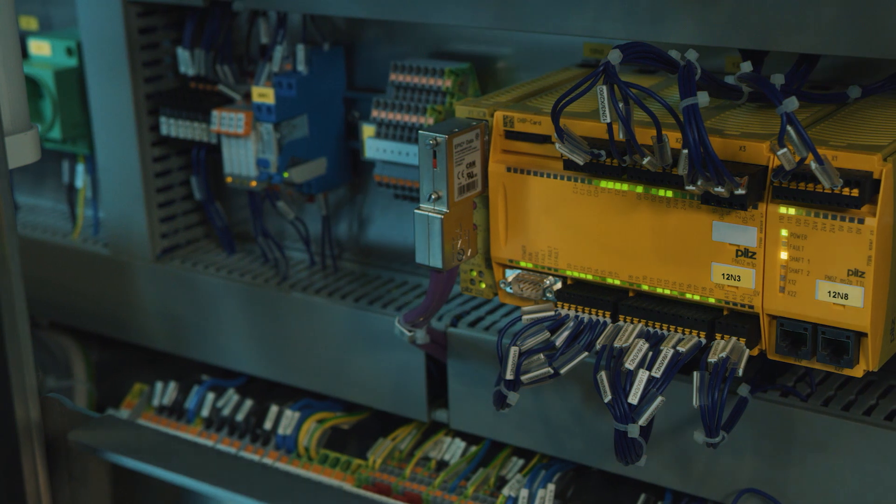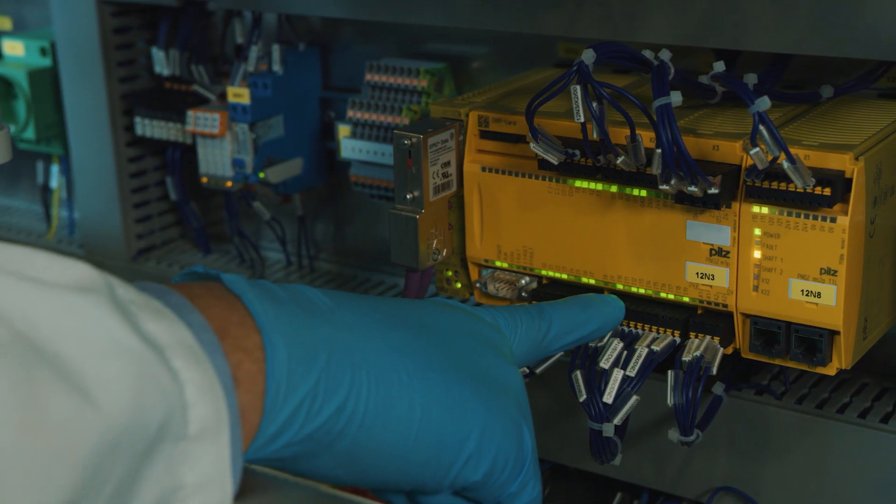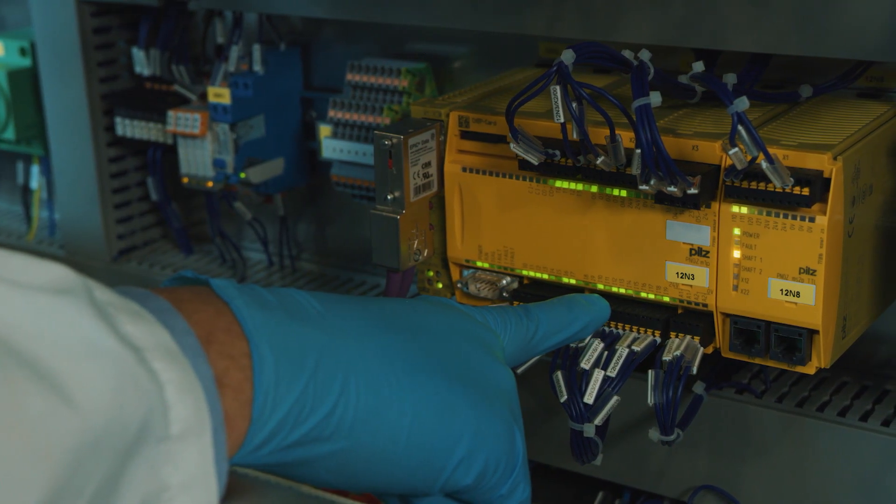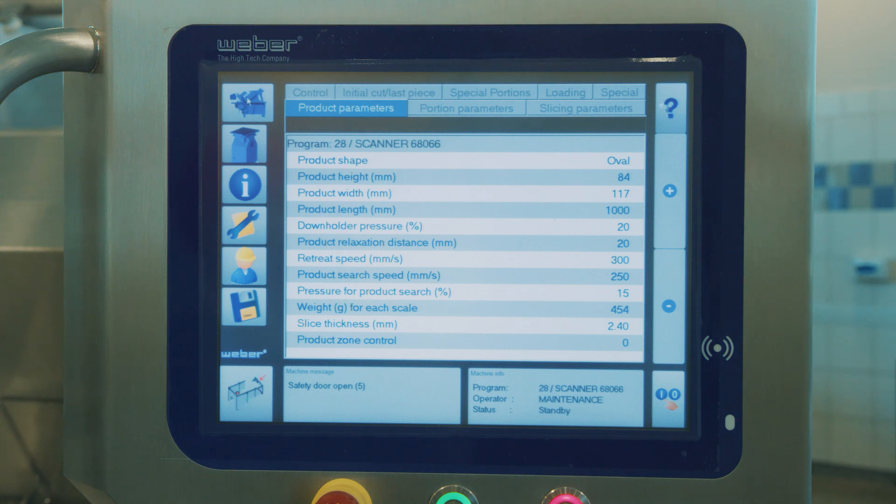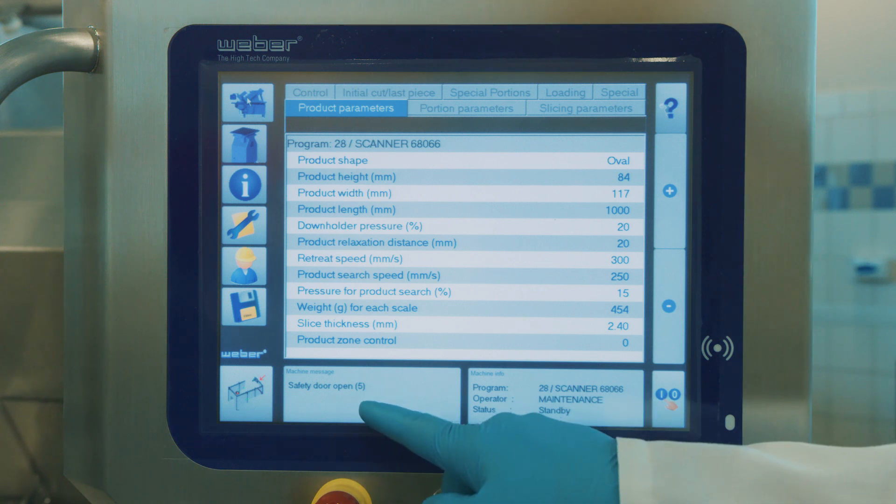Locate the magnet and switch you are troubleshooting. The HMI should give you an indication of what cover or door is registering the error. For example: Safety door 1 open.